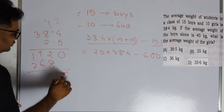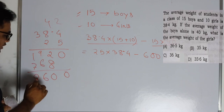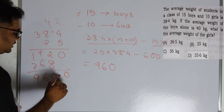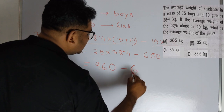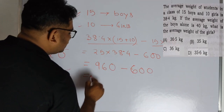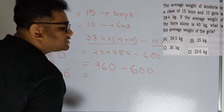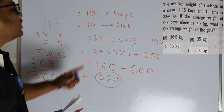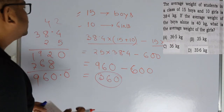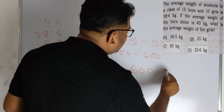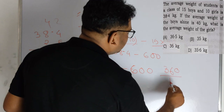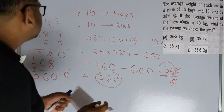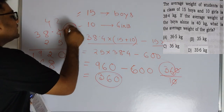So, 0, 10, 16, 9 — how much is it? 960. How much is it? 600. So if we subtract, we get 960 minus 600, which is 360. The answer is 36, so option C has it. Therefore, option C is the correct answer.